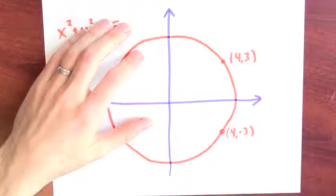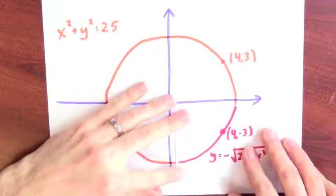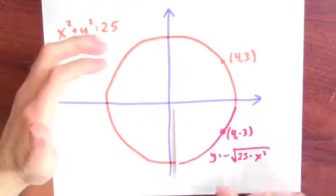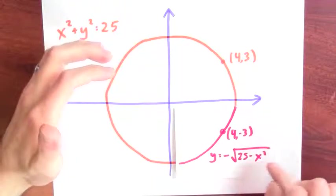If I had picked a different point, then I'd want to pick a different function. Instead of the square root of 25 minus x squared, if I wanted to stand down here near the point 4 comma minus 3, well then maybe I'd pick the function y equals negative the square root of 25 minus x squared.